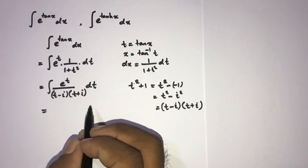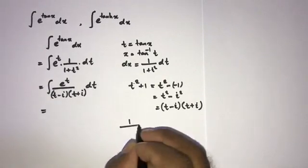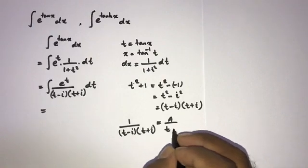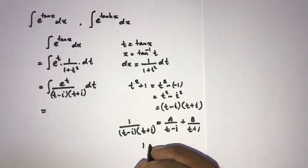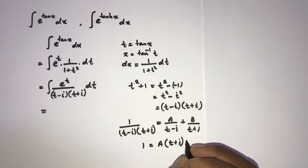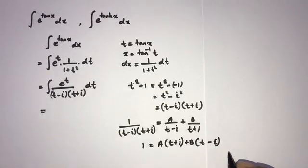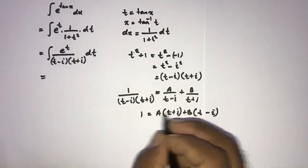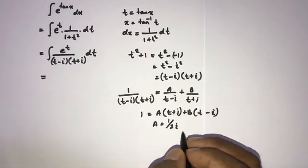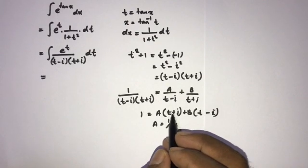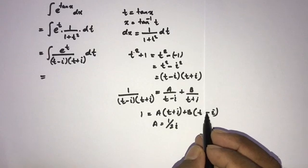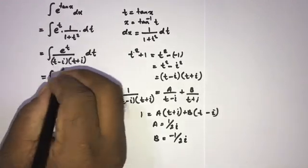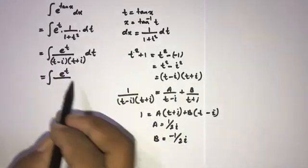Now we can use partial fractions. If we take 1 over (t minus i)(t plus i), this equals A over (t minus i) plus B over (t plus i), and 1 equals A times (t plus i) plus B times (t minus i). If we plug in t equals i, then B term goes to 0 and 2i remains, so A equals 1 over 2i. If we plug in t equals minus i, then A term goes to 0, so B equals minus 1 over 2i.